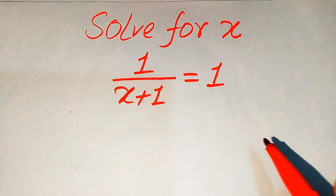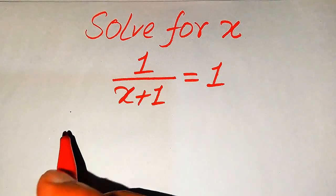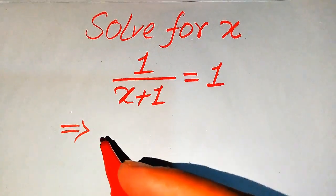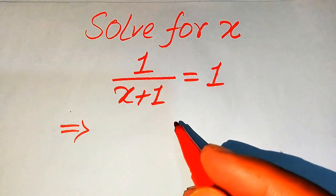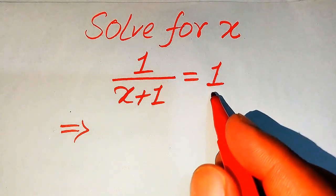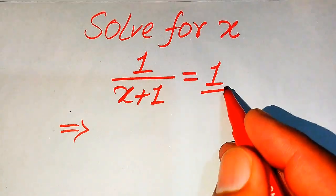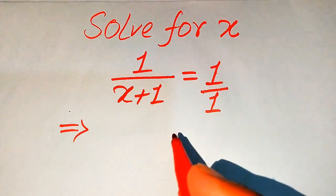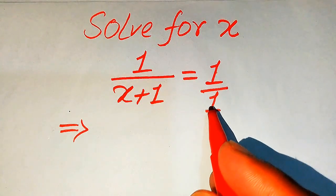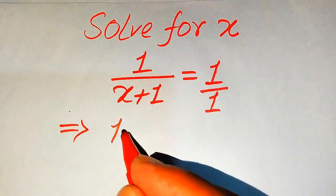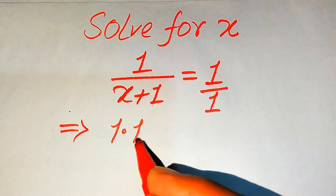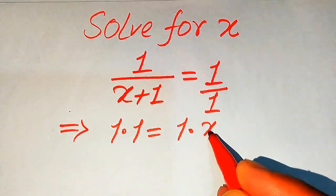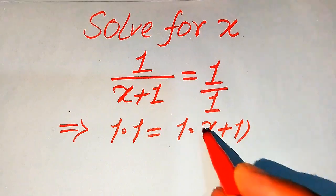First we need to find all the roots of this equation, and now we move toward the solution of this problem. The very first thing we are going to do is, in order to find the value of x, you focus on the right hand side and you see here the denominator of this term is 1. Now we need to cross multiply the terms, and when we multiply 1 with this 1, it will be written as 1 times 1 is equals to 1 times of x plus 1.